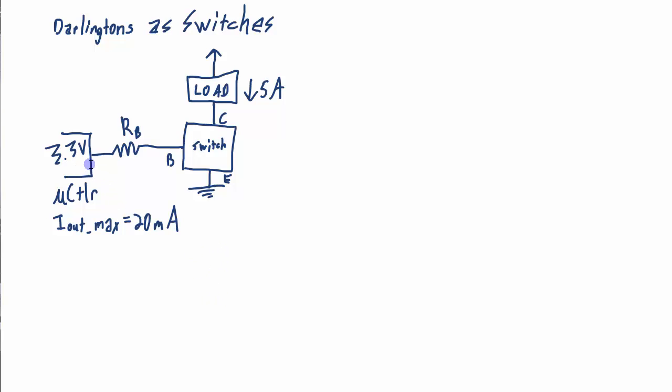And I want to be able to control a load that draws 5 amps from this microcontroller so I can use a solid state switch at this point. Now what if I was to use just an NPN transistor with a beta in a typical range of let's say 150. So I want to run this switch in saturation when it's turned on.